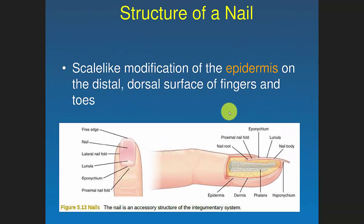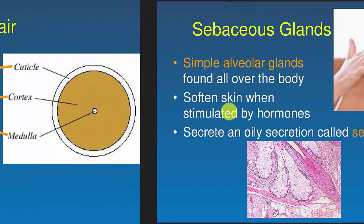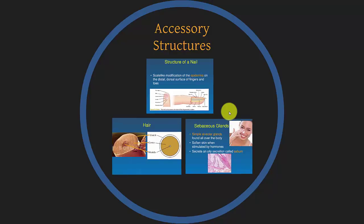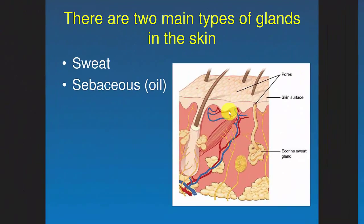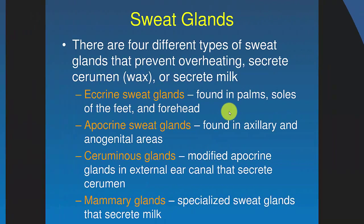Accessory structures include nails, hair, and glands. There are two main types of glands: sweat and sebaceous (oil) glands. We have two different types of sweat glands: eccrine glands, found in the palms, soles of the feet, and forehead; and apocrine glands, found in the axillary areas (armpits) and anal-genital areas. Apocrine glands tend to have more bacteria and so produce more of a scent.